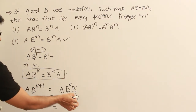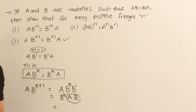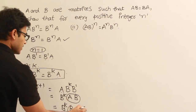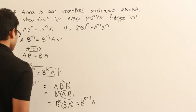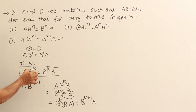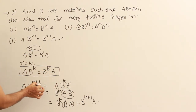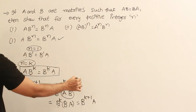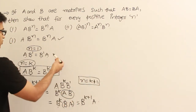We already know that A into B equals B into A. Therefore in place of A into B, I substitute B into A. So combined with B power K, that gives us B power K plus 1 into A. So from A into B power K equal to B power K into A, we got A into B power K plus 1 equal to B power K plus 1 into A, meaning if it is true for n equal to K, it is also true for n equal to K plus 1. Therefore, by mathematical induction, it is true for all values of n.